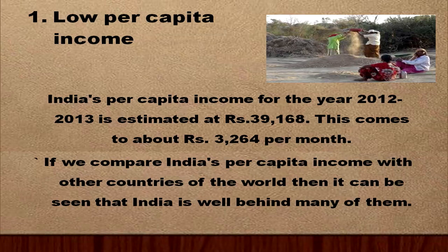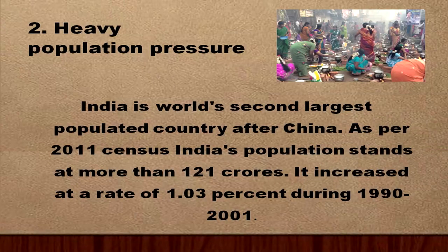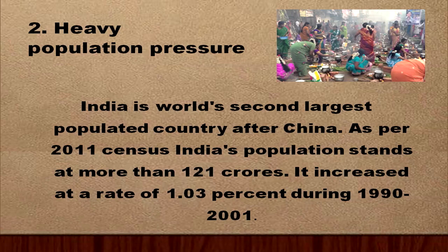If we compare India's per capita income with other countries of the world, India is well behind many of them. India is the world's second largest populated country after China. As per the 2011 census, India's population stands at more than 121 crores. It increased at an annual average rate of 1.03 percent during the decade 1990 to 2001, and that is why we have heavy population pressure on the Indian economy.